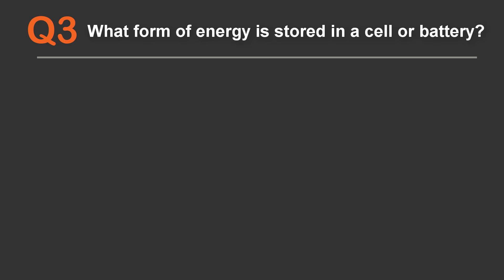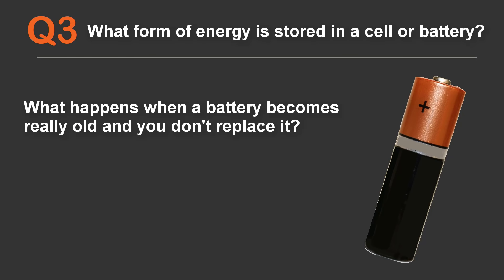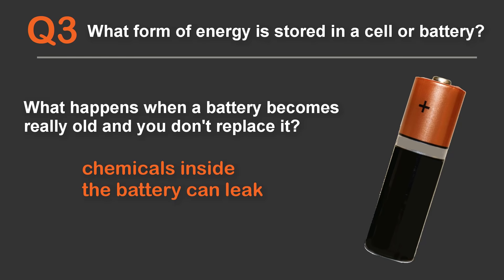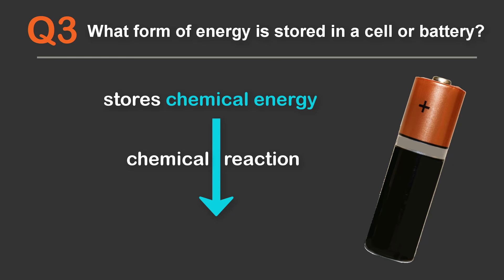Question 3: What form of energy is stored in a cell or a battery? I'm sure you've all used a battery in toys or torches. When the battery becomes really old and you don't replace it, it can leak — the chemicals inside start leaking out. Since the battery is made of chemicals, the energy is stored in the form of chemical energy. When the battery is being used, a chemical reaction takes place inside and it supplies electrical energy. In summary, the battery stores chemical energy and supplies electrical energy.